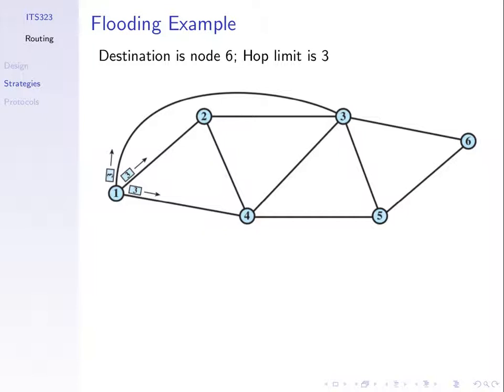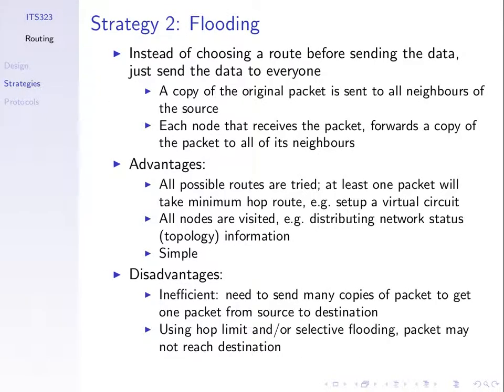The transmissions from one to four and one to two were wasteful — they weren't needed to get the data to six. Flooding is not commonly used in large networks except for special purposes like distributing information to everyone. If we want to deliver data from one node to one other node, flooding is very inefficient in large networks. We should first discover the least cost path.